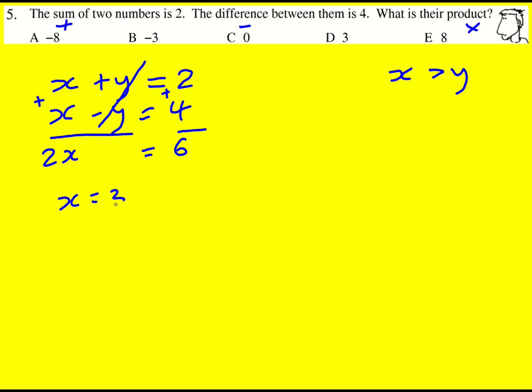Therefore, x is 3. Substitute back in. So y must equal minus 1, because 3 plus minus 1 is 2. And also 3 minus minus 1 is 4. So that all checks out.